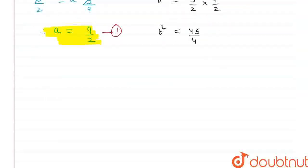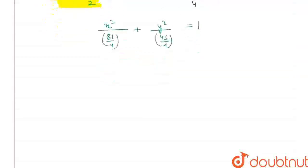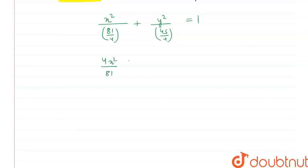And so I have the value of b square. I have the value of a. Therefore the equation of my ellipse is going to be x square upon a square, 81 by 4, plus y square upon b square, 45 by 4, is equal to 1, which is equal to 4x square upon 81 plus 4y square upon 45 is equal to 1.